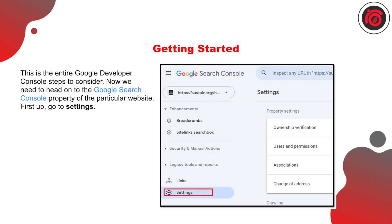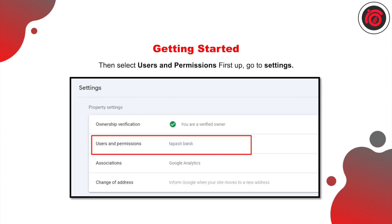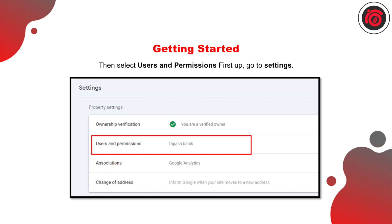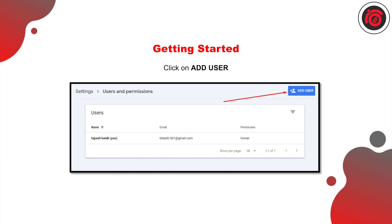Now go back to Google Search Console, click on 'Settings,' go to 'Users and Permissions,' and remember the dummy user you created in Google Developer Tools — you have to add that user to your Google Search Console. Paste the email address you copied earlier, then hit 'Add.' The new dummy user will be added to your Google Search Console.